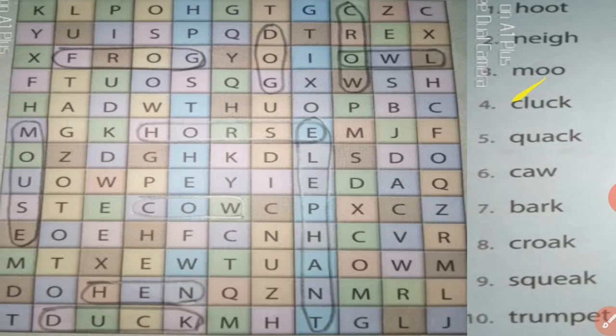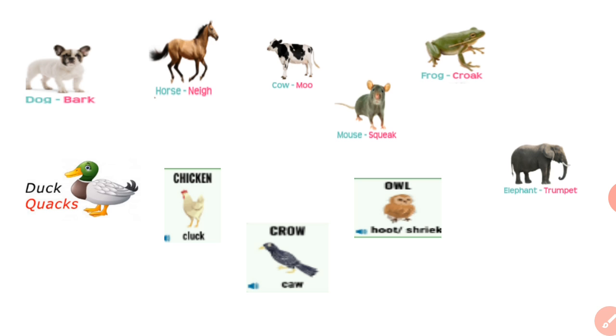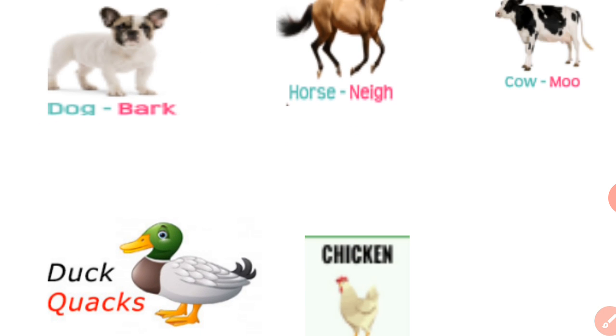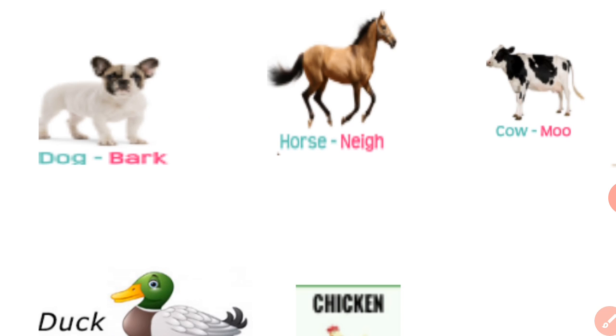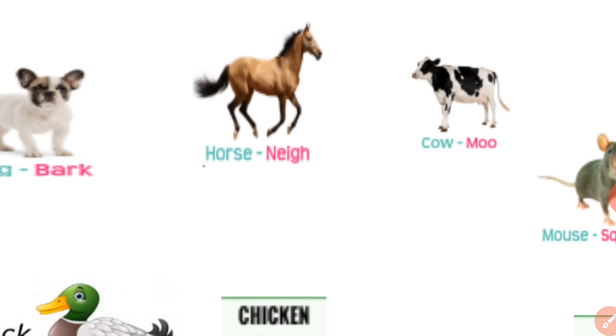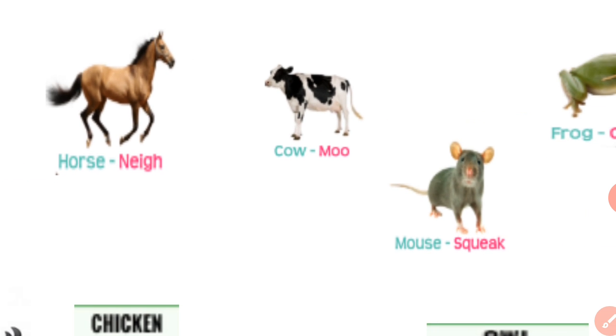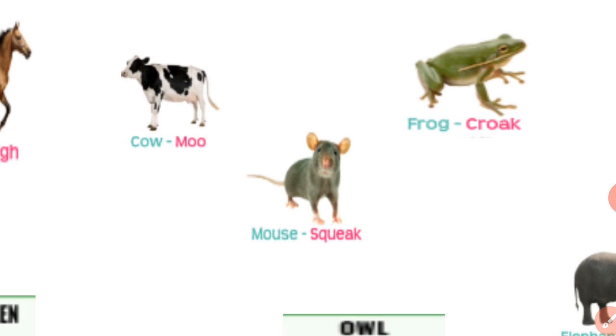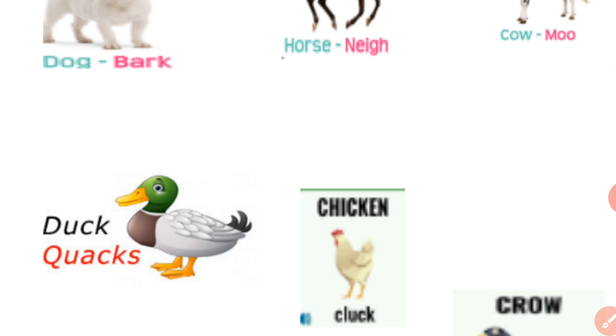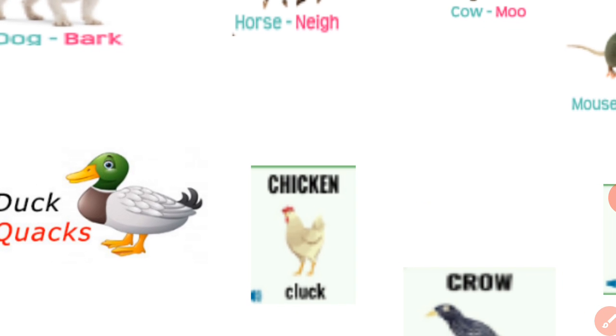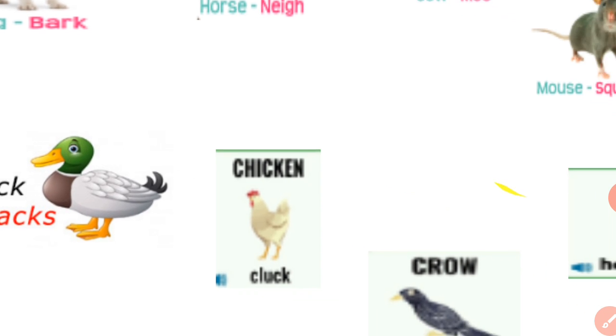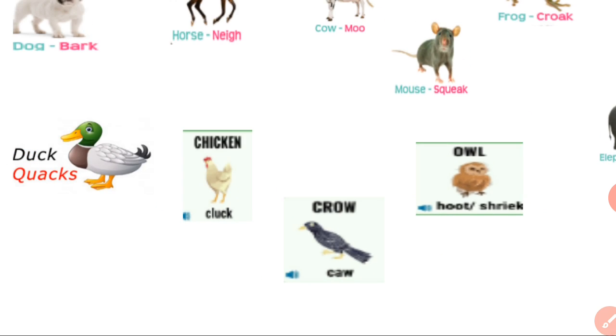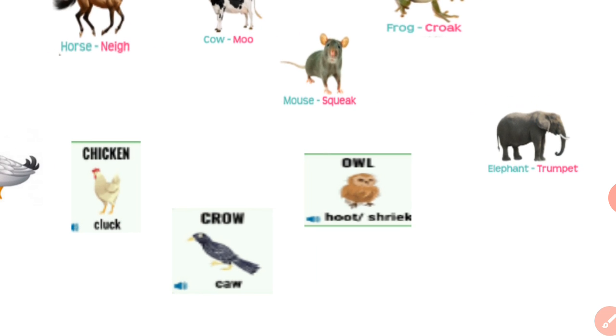Here are the words, sounds, and animals separately. Now I am going to give an example: dog bark, horse neigh, cow moo, mouse squeak, frog croak, duck quack, chicken or hen cluck, crow caw, owl hoot, elephant trumpet. Understood?